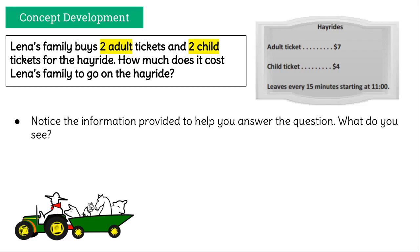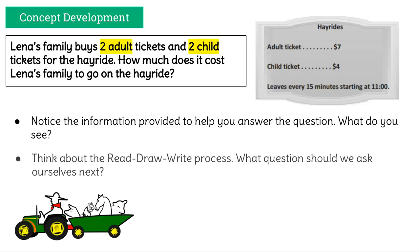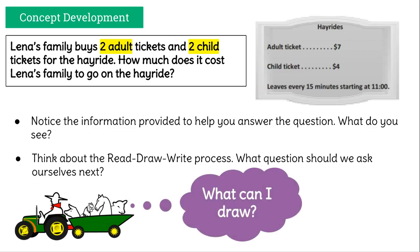Notice the information provided to help you answer the question. What do you see? Think about the read, draw, write process. What questions should we ask ourselves next? Now that we know what to do, we should be thinking: what can I draw? What kind of diagram should I use? I could do a tape diagram, a number line, or a number bond — there are all kinds of different ones I can use for this.